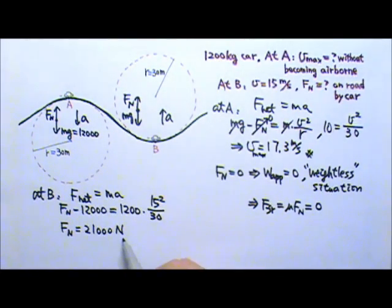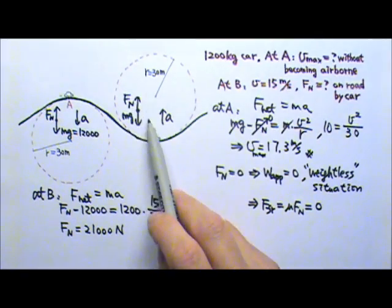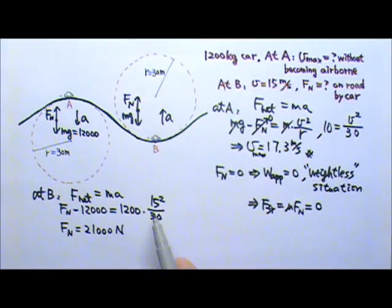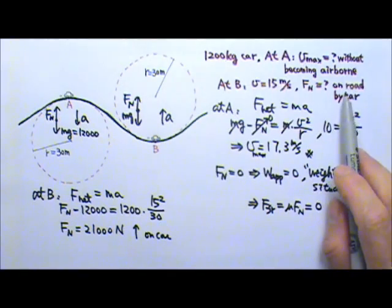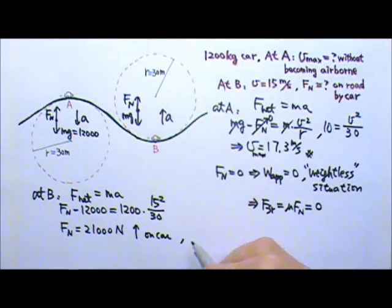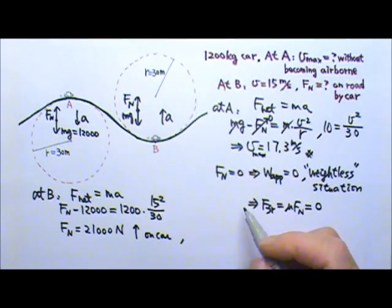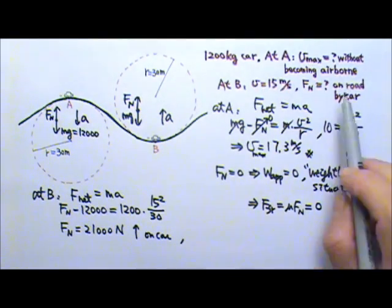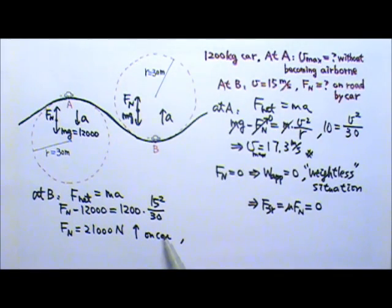Now, this is the normal force acting on the car, because this is the force diagram of the car. So the normal force is 21,000 newtons upward on the car. And what we want is the normal force on the road by the car. These two normal forces, they are equal and opposite action force and reaction force pair. So the answer must be 21,000 newtons down on the road.